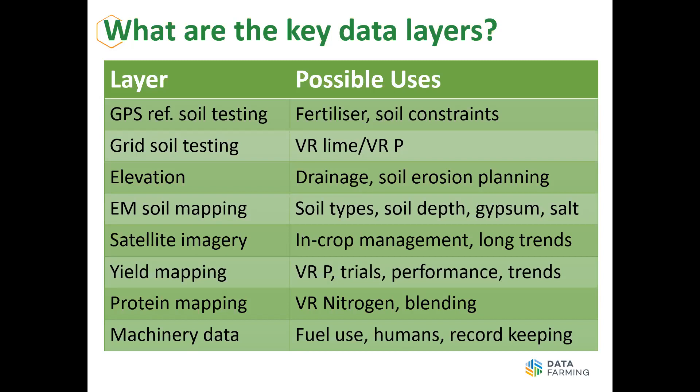Satellite imagery is now on tap — beautiful for looking at in-crop management and long-term trends, with an image every five days for the last five years over your farm. We're now at about 80% of headers with yield mapping. Yield maps are perfect for replacement of phosphate if you're a heavy user, for analysing trials to determine return on investment from a treatment, and as the ultimate measure of crop growing performance. Many people have 15 years of yield data — much of it a bit of a mess, but at least it gives you those long-term trends.